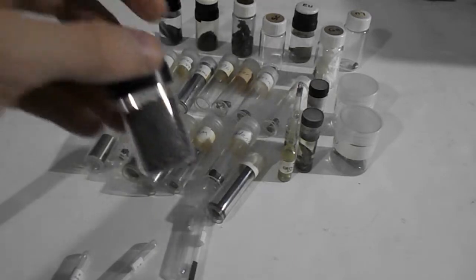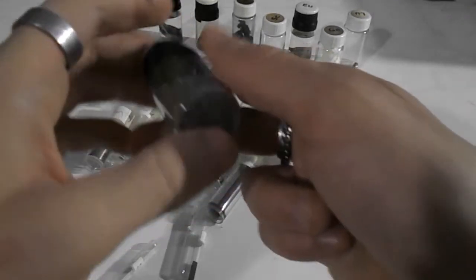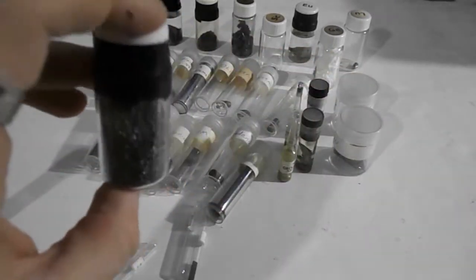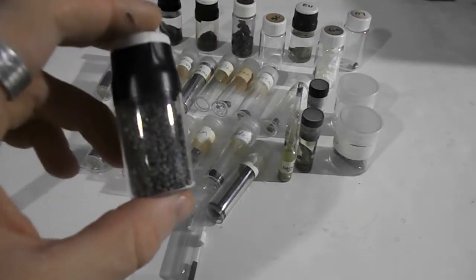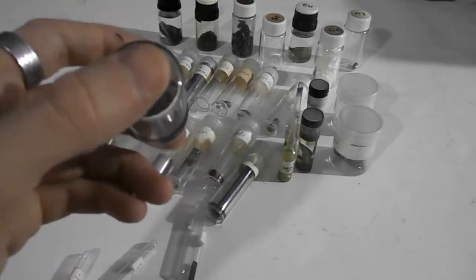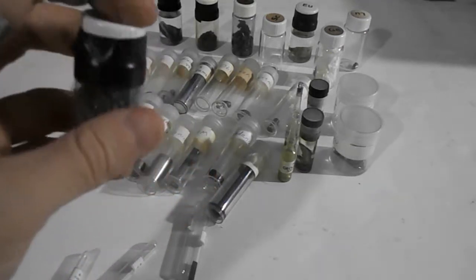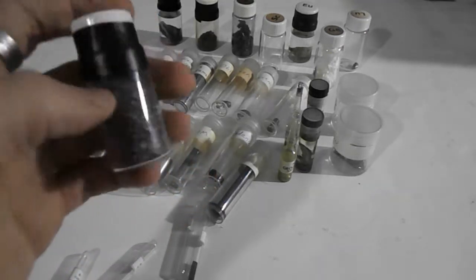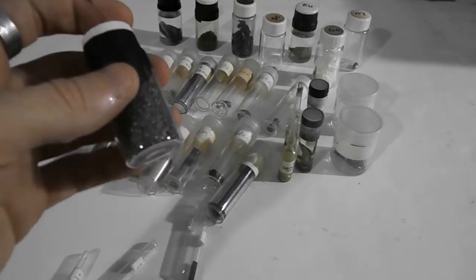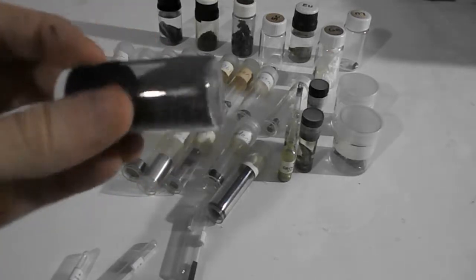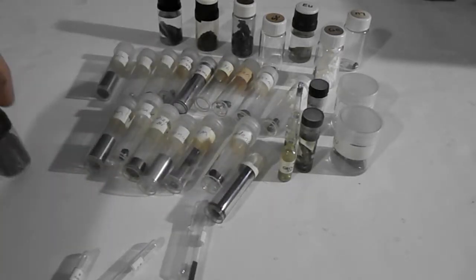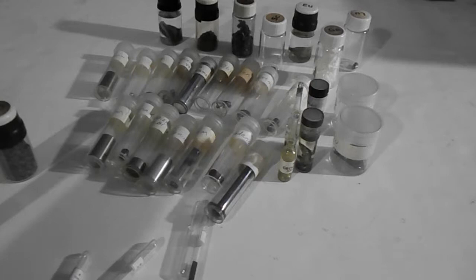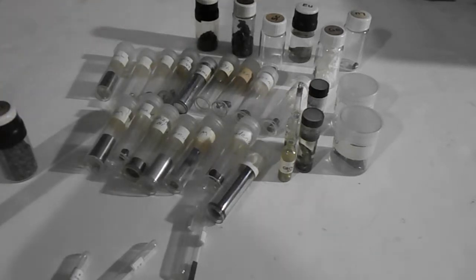Here we have calcium, which is number 20 on the periodic table. Most people think of calcium as being a white powder or being like bones and teeth and stuff, but in fact calcium is actually a metal. It's what's known as an alkaline earth metal. The white powder is in fact most often calcium carbonate.